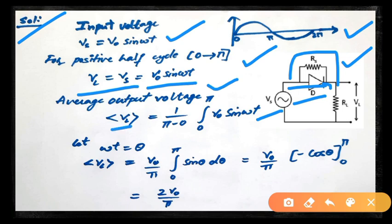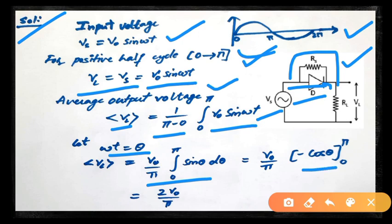The average output voltage for the positive half cycle is given by: average of VL = (1/π) × ∫₀^π V0 sin(ωt) dt. Substituting ωt = θ, this becomes (V0/π) × ∫₀^π sin(θ) dθ. The integral of sin(θ) is −cos(θ). Applying limits: −cos(π) = 1 and −cos(0) = −1, giving +2. So the average output voltage for the positive half cycle is 2V0/π.